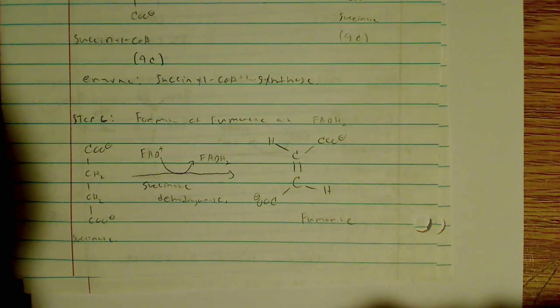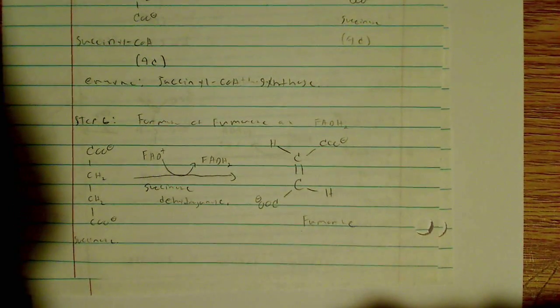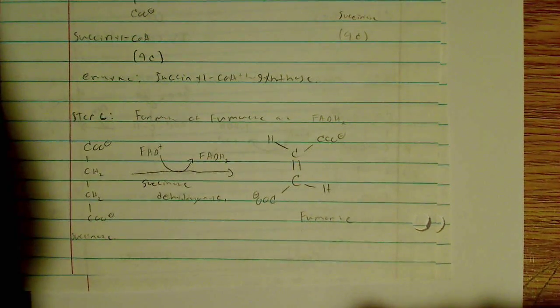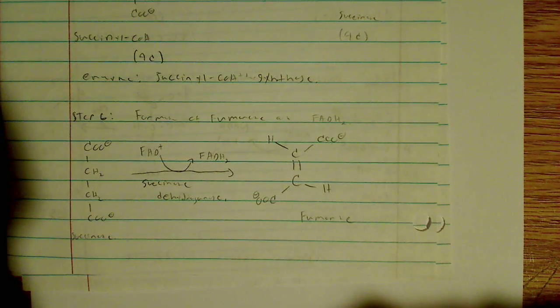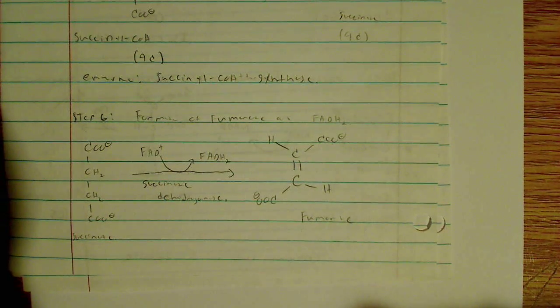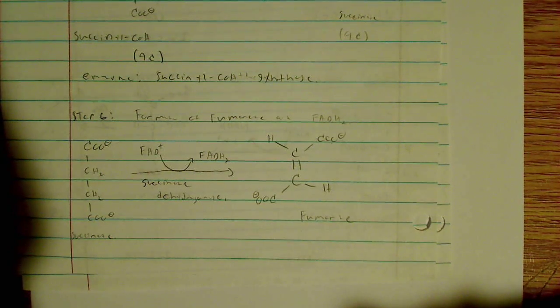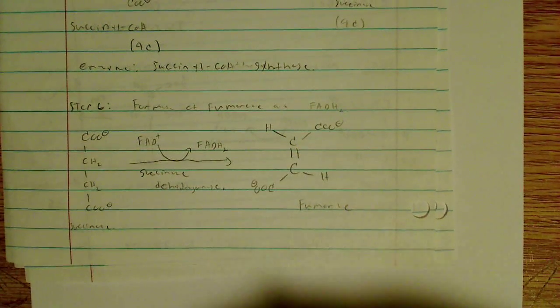Now, the final reaction down here in six on this page is the conversion of succinate to fumarate. And that's converting FAD, or I shouldn't say converting, I should say reducing FAD to FADH2. And that's by an enzyme known as succinate dehydrogenase. So you can see kind of where this double bond is here.